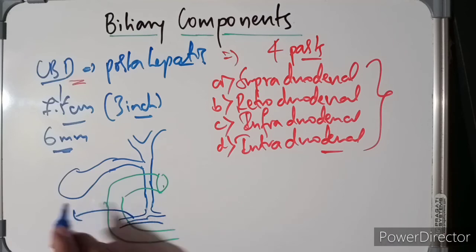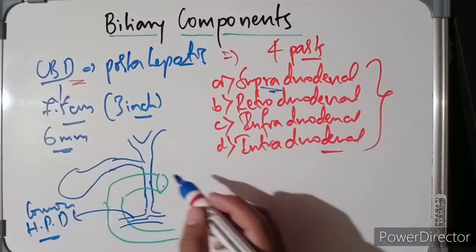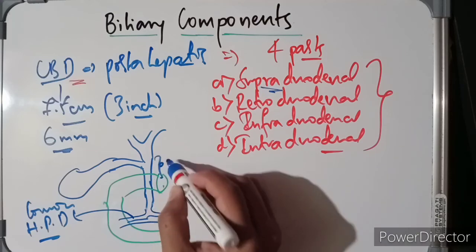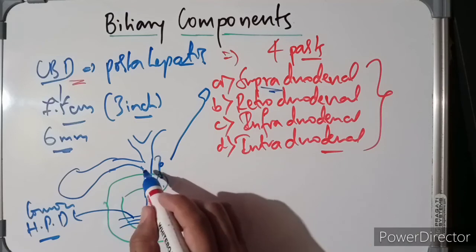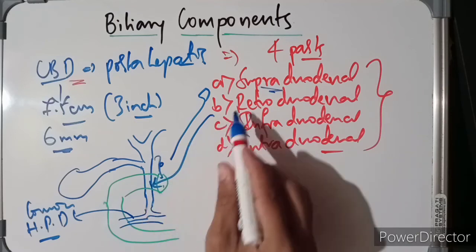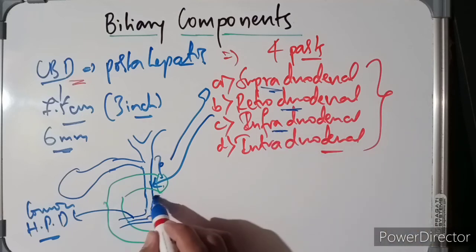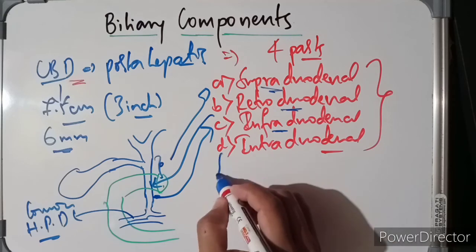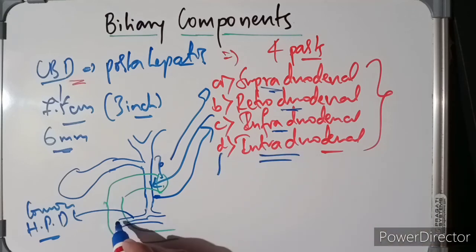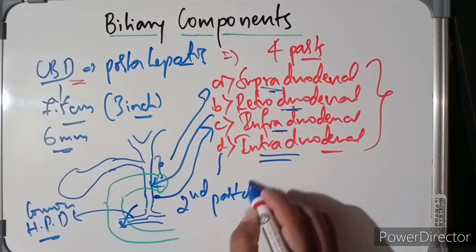The supraduodenal part is the common bile duct above the duodenum. The retroduodenal part goes behind the duodenum. The infraduodenal part is just below the duodenum. The intraduodenal part of the common bile duct is situated inside the second part of the duodenum.